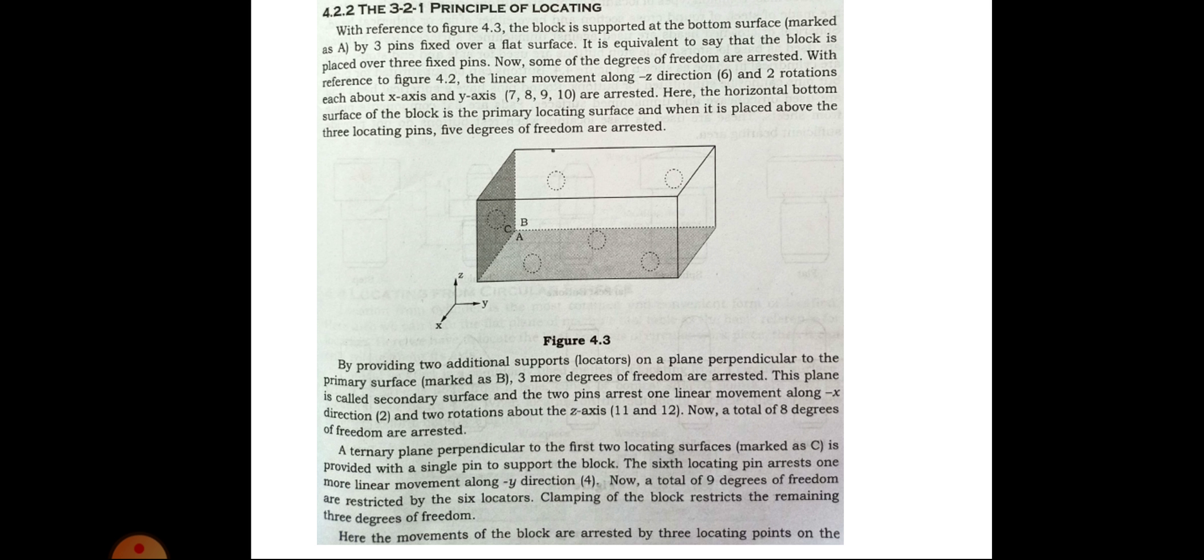In the diagram, the block is supported at the bottom surface marked as A by three pins fixed over a flat surface. It is equivalent to say that the block is placed over three fixed pins. Now, some of the degrees of freedom are arrested. With respect to figure, the linear movement along minus Z direction, the six and two rotations each above X-axis and Y-axis, that is seven, eight, nine, ten, are arrested. Here, the horizontal bottom surface of the block is primarily a locating surface, and when it is placed above the three locating pins, five degrees of freedom are arrested.